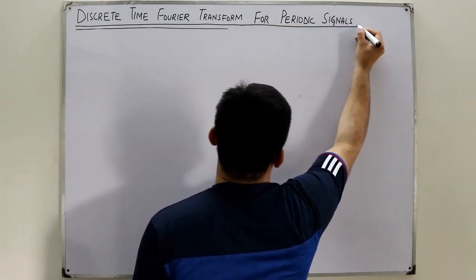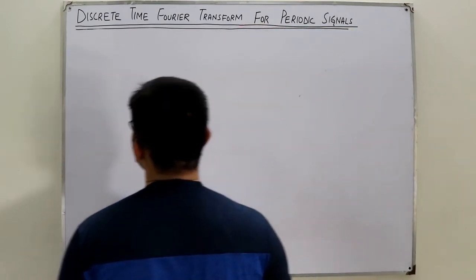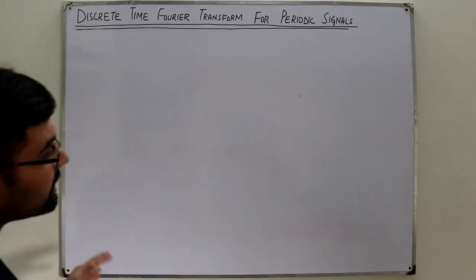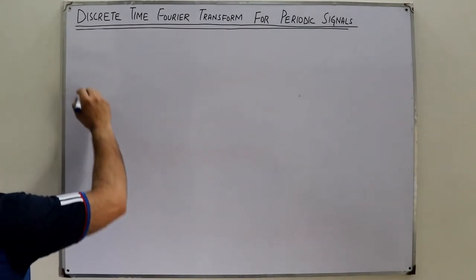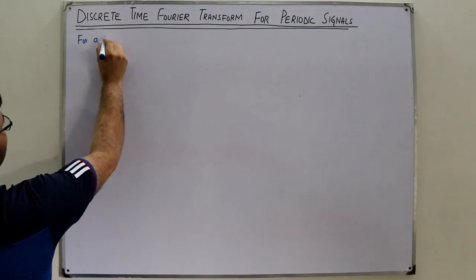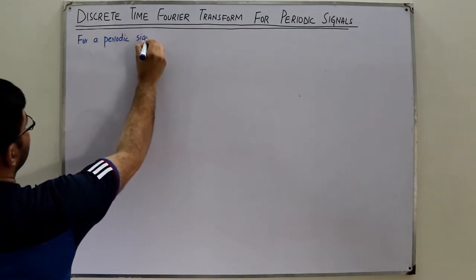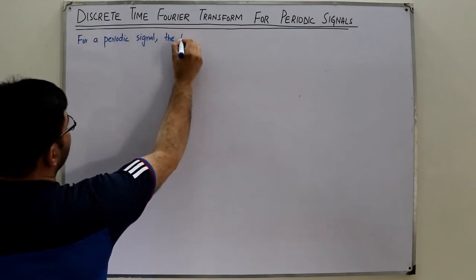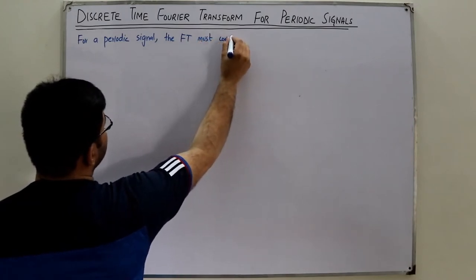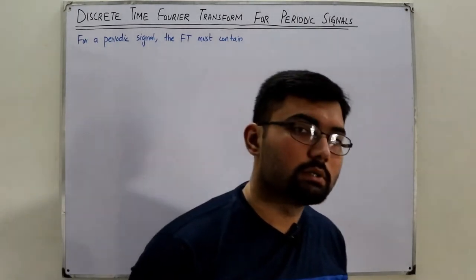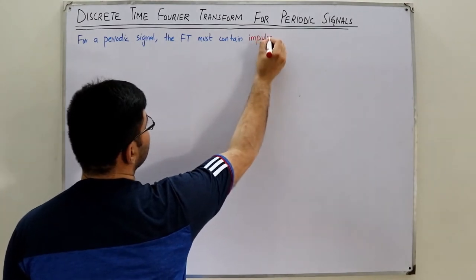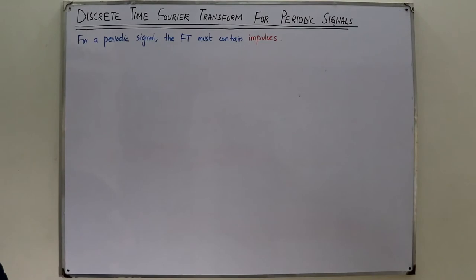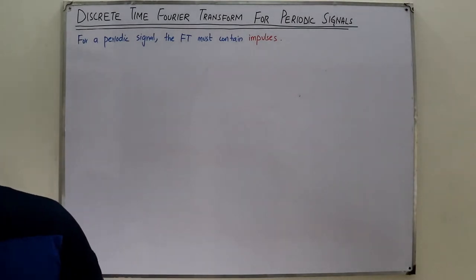This is a unified framework to discuss both aperiodic and periodic signals together. For a periodic discrete time signal, the Fourier transform must contain impulses.